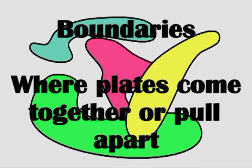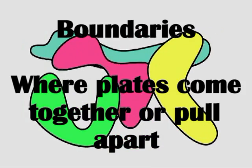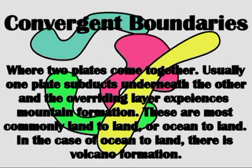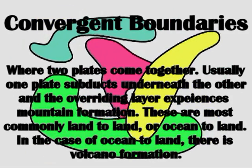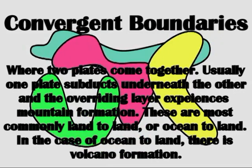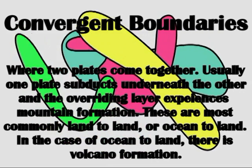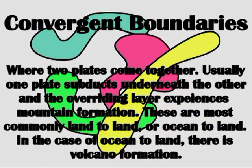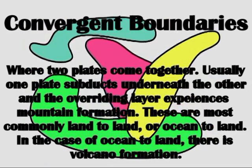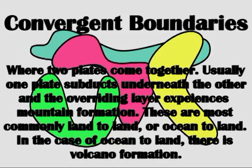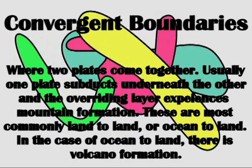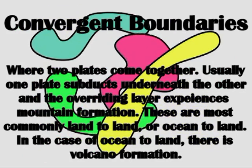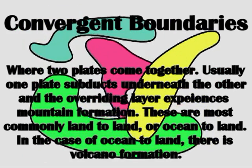Because the plates move around, they often collide and pull apart. Three different ways that they can interact are at different boundaries. At convergent boundaries, when plates come together and collide, they crunch up land as a result of subduction, where one plate overrides the other and one gets sucked back down.